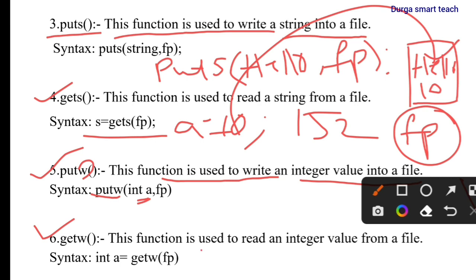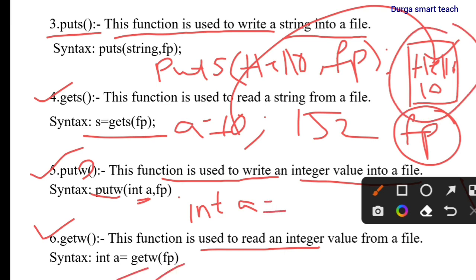The next function is getw. getw is used to read an integer value from a file. The syntax is: int a = getw(fp). Whatever integer value is stored in the fp file will be returned and stored in the variable a.